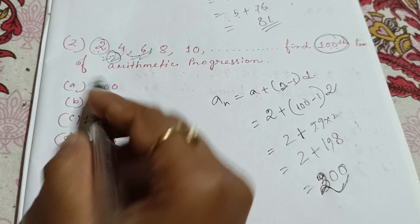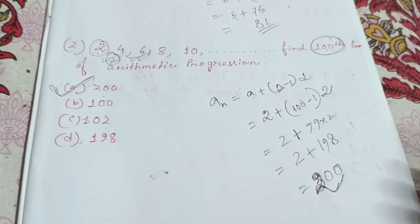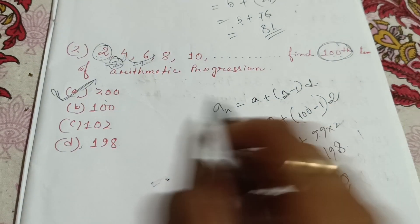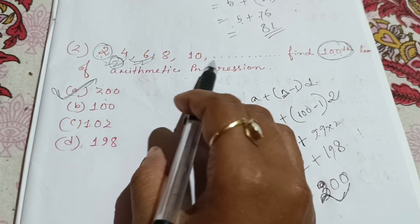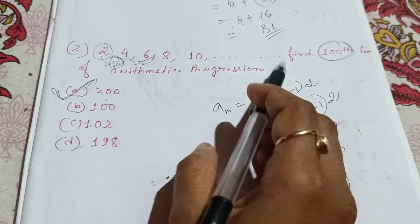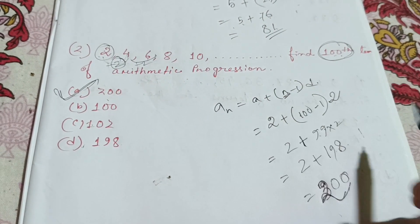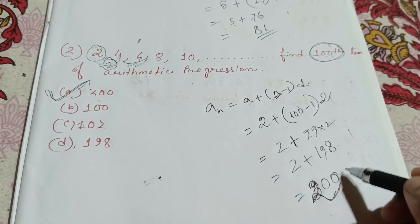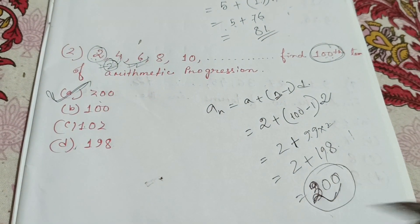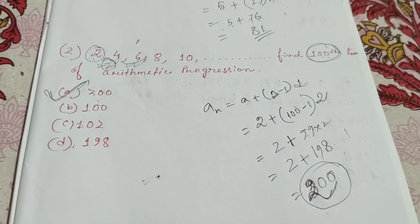98 plus 2 is equal to 200. Option A is correct.